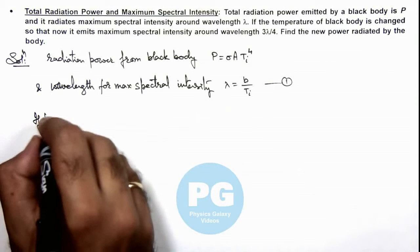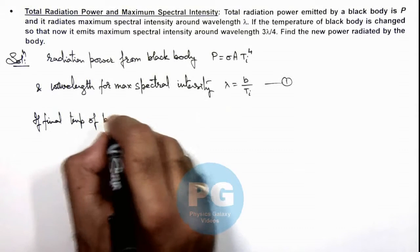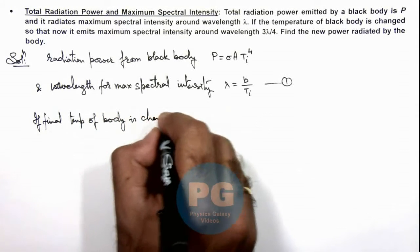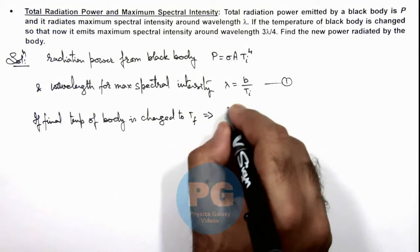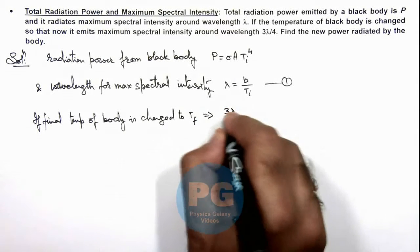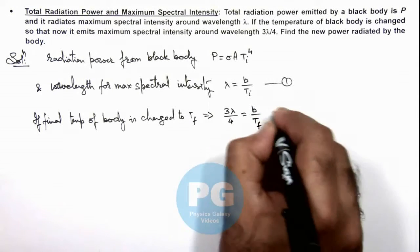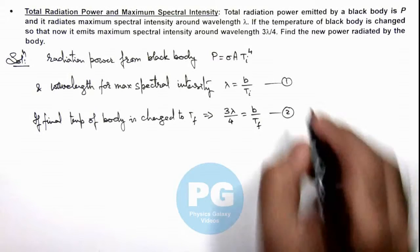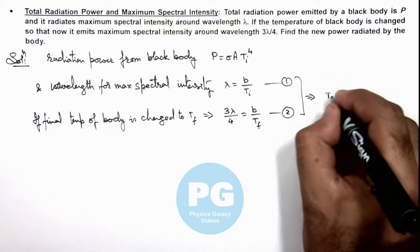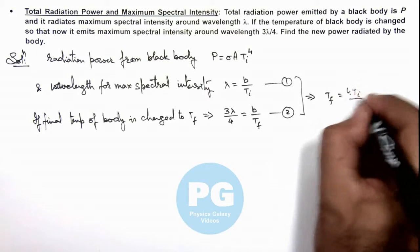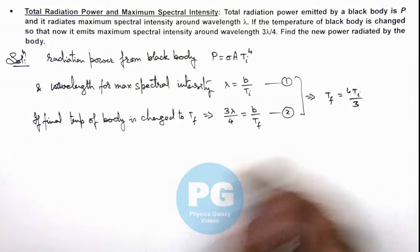Now, if the final temperature of the body is changed to T_f, this implies the new wavelength for maximum spectral intensity is 3λ/4 = b/T_f, which is equation 2. From these two equations, if we divide these values, we get the final temperature T_f = 4T_i/3. So the final temperature is increased, which is why the wavelength is decreased.